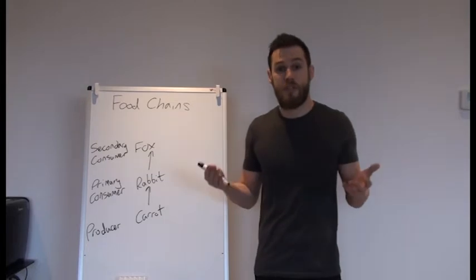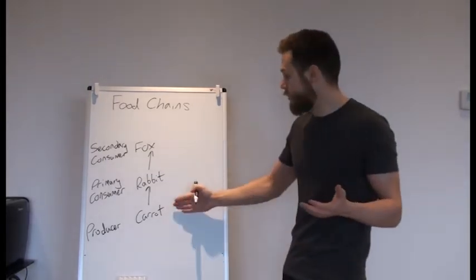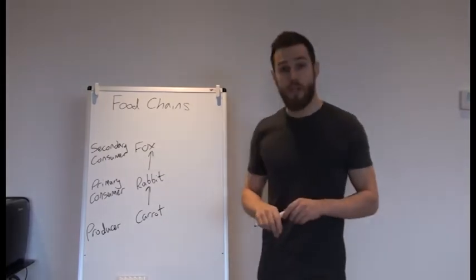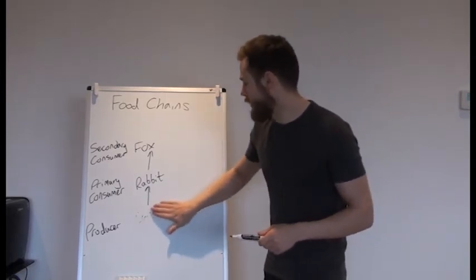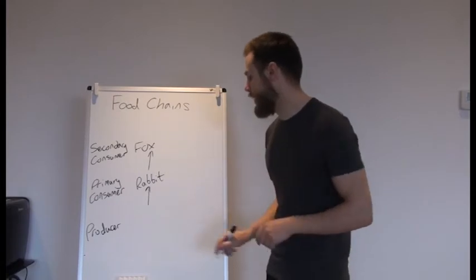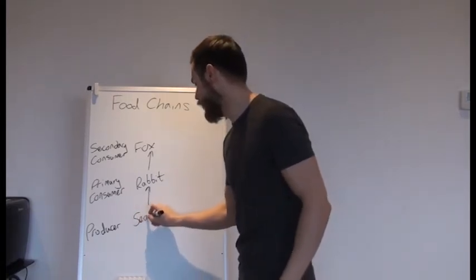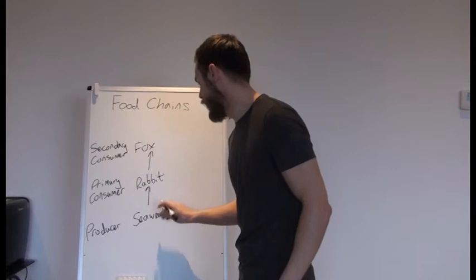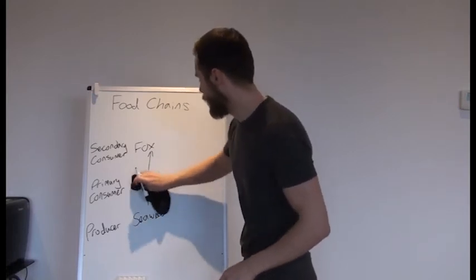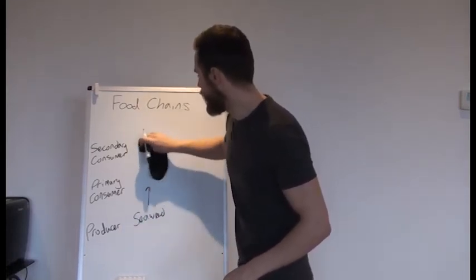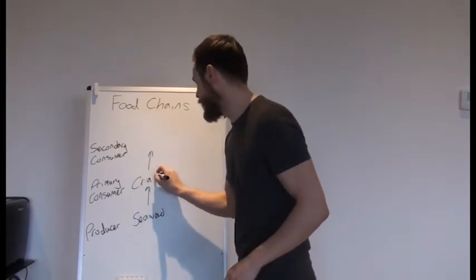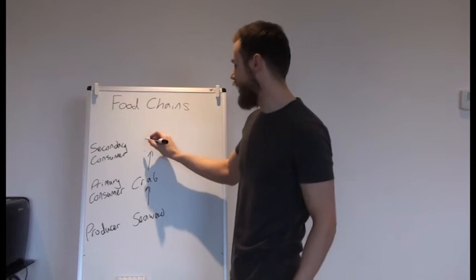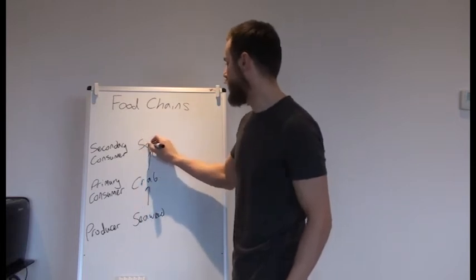Now to make sure we understand this let's replace all of these with equivalent examples, animals in a different ecosystem. Instead of carrot we might have, let's say, seaweed. Instead of a rabbit and instead of a fox we could have a crab that eats the seaweed and we could also have a squid which eats the crab.